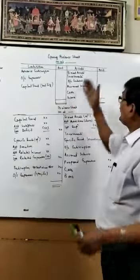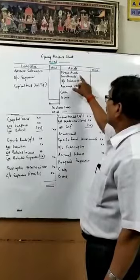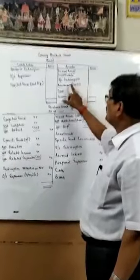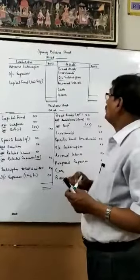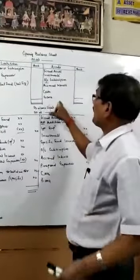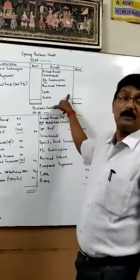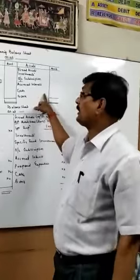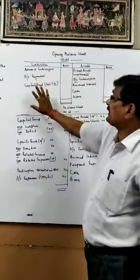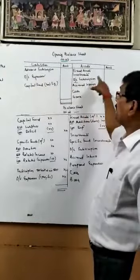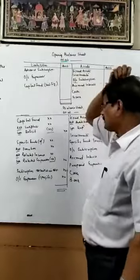For the opening balance sheet, the assets side records fixed assets, investments, outstanding subscription — meaning subscription earned but not received, similar to accrued income — accrued interest, and cash and bank. This balance sheet is prepared in the order of permanence. On the liabilities side: advance subscription, outstanding expenses, and capital fund. This opening capital fund is the balancing figure — total assets minus total liabilities.